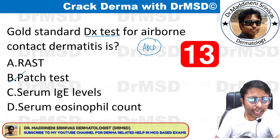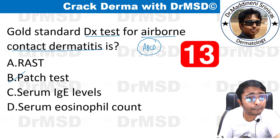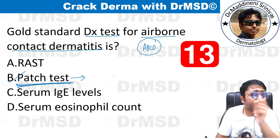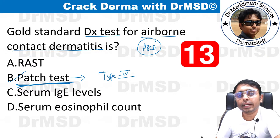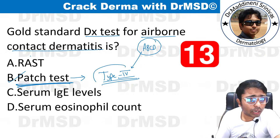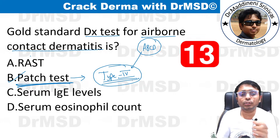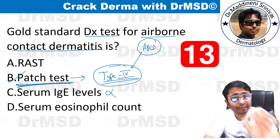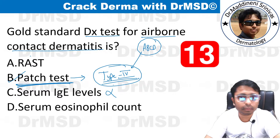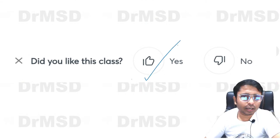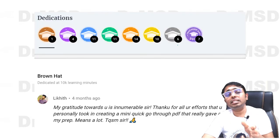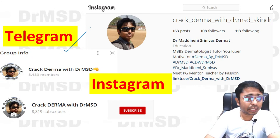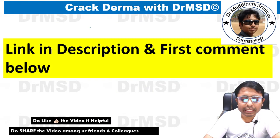Gold standard diagnostic test for airborne contact dermatitis is the patch test. Patch test works on the principle of identifying type 4 hypersensitivity reaction — the same mechanism operative in airborne and allergic contact dermatitis. Serum IgE levels are not the answer because they may fluctuate and can even be normal in patients with airborne or allergic contact dermatitis. I hope all of you enjoyed this session — please like the video and join my Telegram group for dermatology updates.